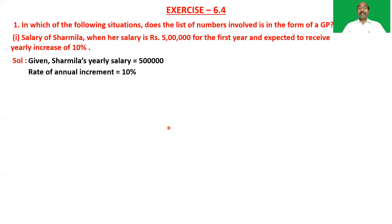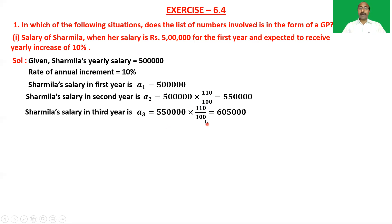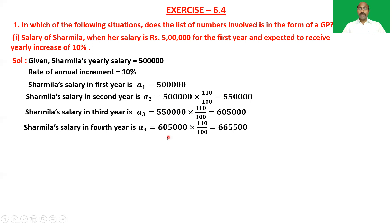Let us see the year-wise salaries of Shirmila. Salary in the first year, a₁, is 5 lakh rupees. In the second year, a₂ equals 5 lakhs into 110/100, which is 5 lakhs 50,000 rupees. In the third year, a₃ equals 5 lakhs 50,000 into 110/100, which is 6 lakhs 5,000. In the fourth year, a₄ equals 6 lakhs 5,000 into 110/100, which is 6 lakhs 65,500 rupees.